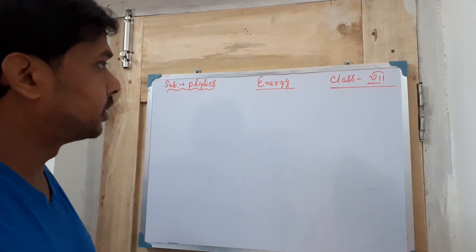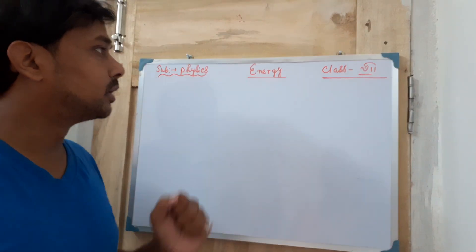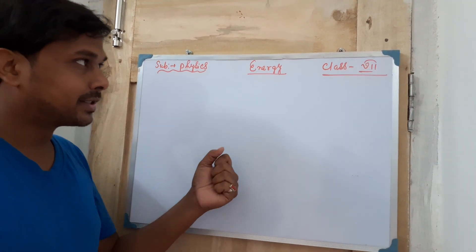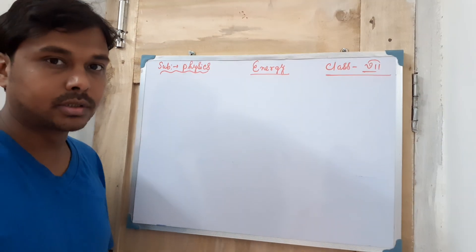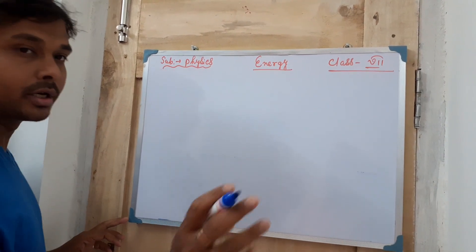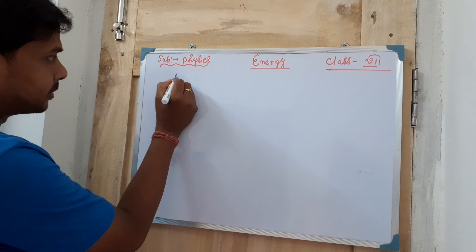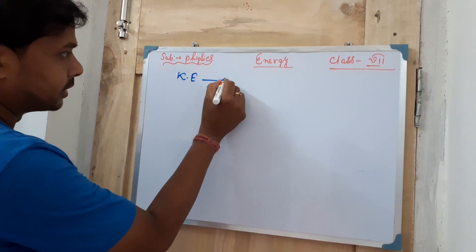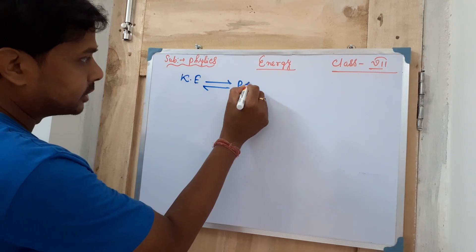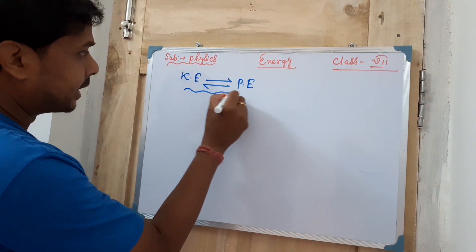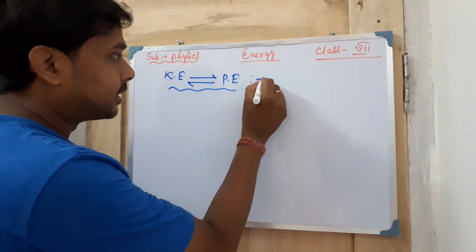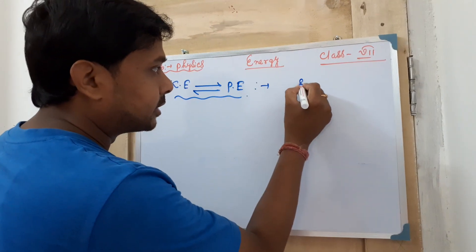Hello students of Class 7. Today we will continue the same chapter on energy. We will discuss the interconversion of energy — kinetic to potential energy and potential to kinetic energy. When you can show both conversions in one example, you can straightaway write the simple pendulum.